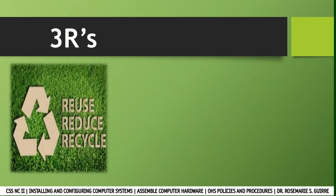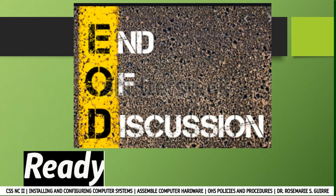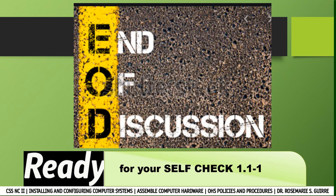We also have the 3 R's: reduce, reuse, and recycle. Reduce calls for waste reduction by using things you already have until the very end of their life cycle, avoiding waste generation. Reuse calls for re-utilization of goods and materials. Recycle calls for the re-utilization of waste as resources. That concludes our discussion for the first topic: Occupational Health and Safety Policies and Procedures. Please be ready for your subject activity 1.1-1, which covers the 5S, the 3 R's, and occupational health and safety.